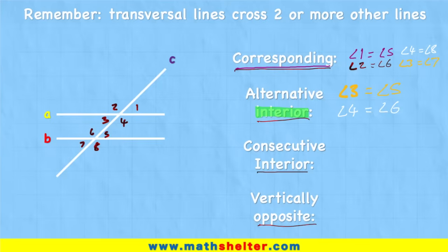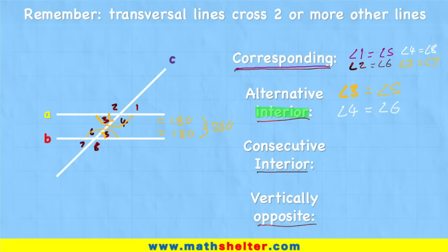Let's think about why that is. If we look at angle three, we're saying we think it's the same as angle five. That's because the full angle on this straight line has to equal 180, and the full angle on this straight line has to equal 180 — therefore those together must equal 360. So as the bigger angle opens, depending on how line C intersects the parallel lines, the small angle will close. And exactly the same thing will happen on the other side as well. Because they're running parallel, they're going to do it in exactly the same way. Therefore, the alternative interior angles are going to be equal to one another.